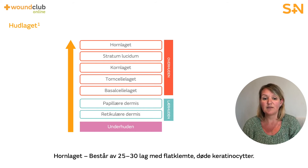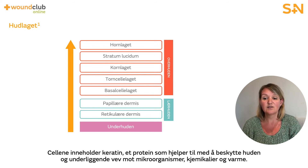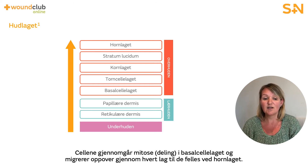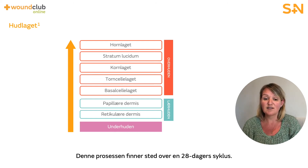The stratum corneum is the outermost layer and consists of 25 to 30 layers of flattened, dead keratinocytes. The cells contain keratin, a protein which helps protect the skin and underlying tissues from microorganisms, chemicals, and heat. These cells undergo mitosis division in the stratum basale and migrate upwards through each level until they are shed at the stratum corneum. This process can take place over a 28-day cycle.